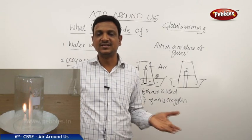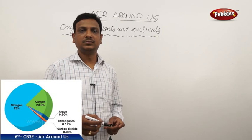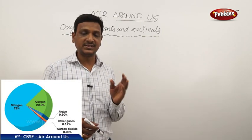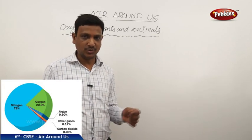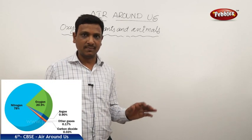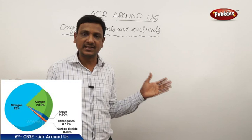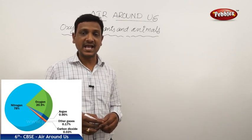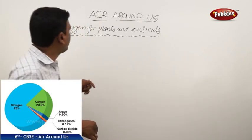Oxygen is a very important part of the air — 21% of air is oxygen. How is it available to animals and plants? Animals and plants on land get oxygen from the atmosphere by breathing. But how about animals and plants that live in water? How do they get oxygen?